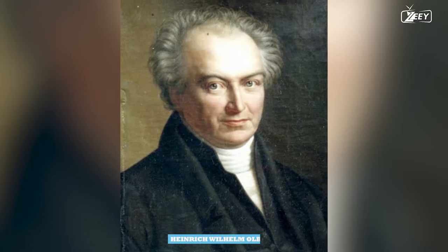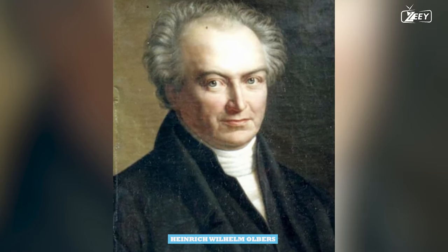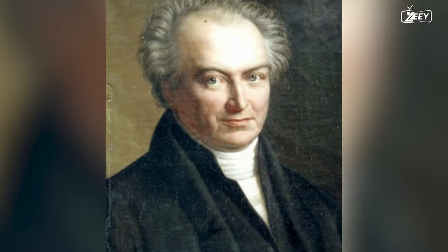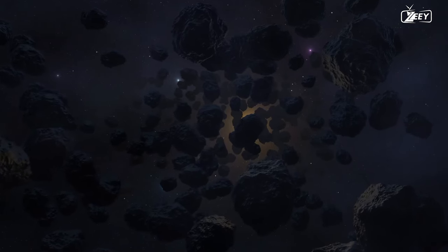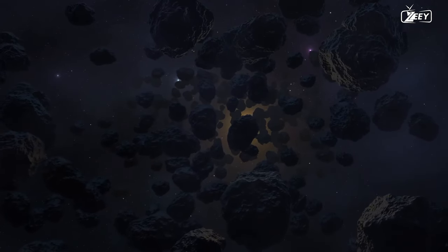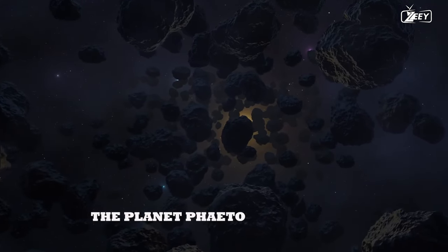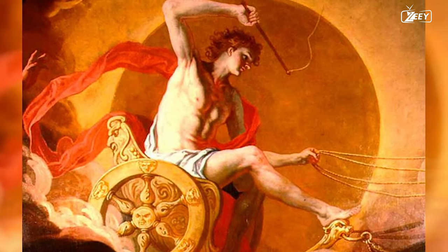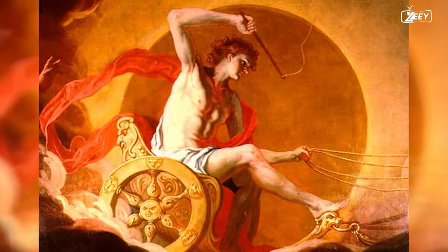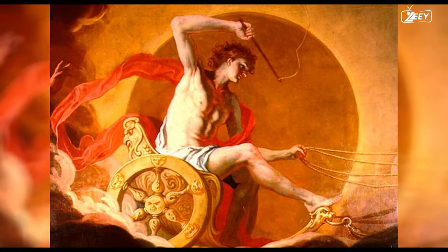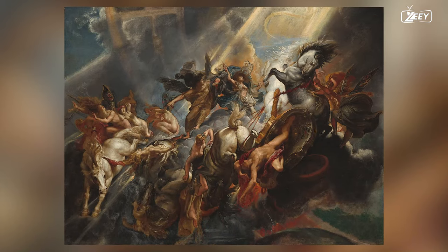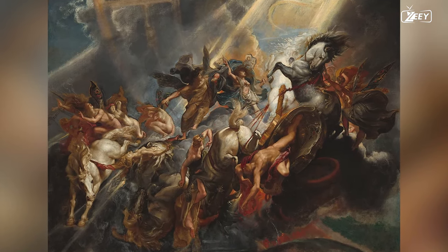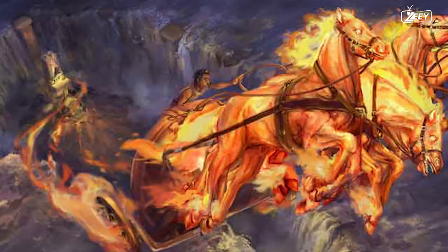In 1823, Heinrich Wilhelm Olbers, the astronomer who discovered the asteroid Pallas, proposed that these objects were truly fragments of a destroyed planet, thereby introducing the Planet Phaeton Hypothesis. The name Phaeton derives from a mythical Greek character and signifies shining one according to the myth. Phaeton was the son of Helios, the Sun Deity, who traversed the sky daily on his burning chariot.